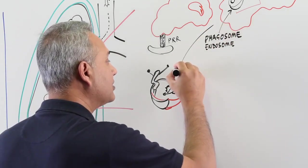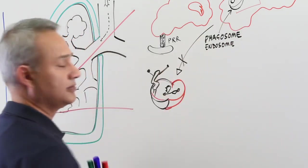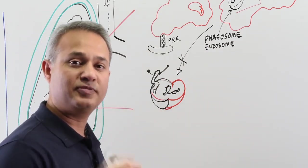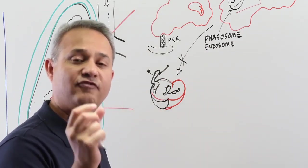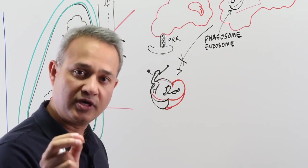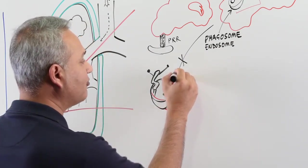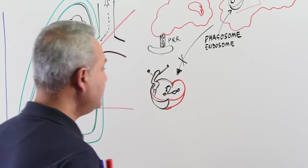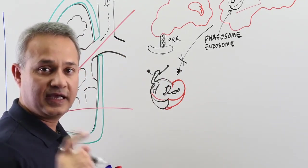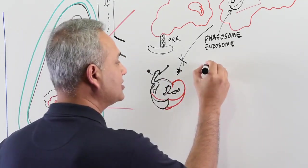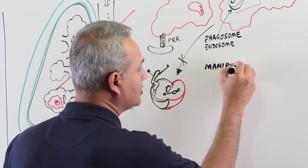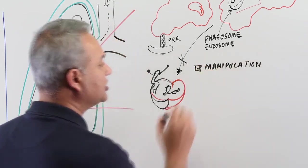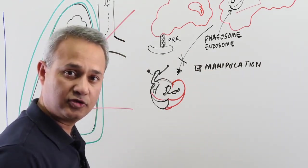However, this step does not happen. This phagosome-lysosome fusion is called maturity of the phagosome and formation of phagolysosome. That step does not happen in case of mycobacterium tuberculosis. This is the root cause of the problem. Now, why does this not happen? It doesn't happen because of a process called manipulation.